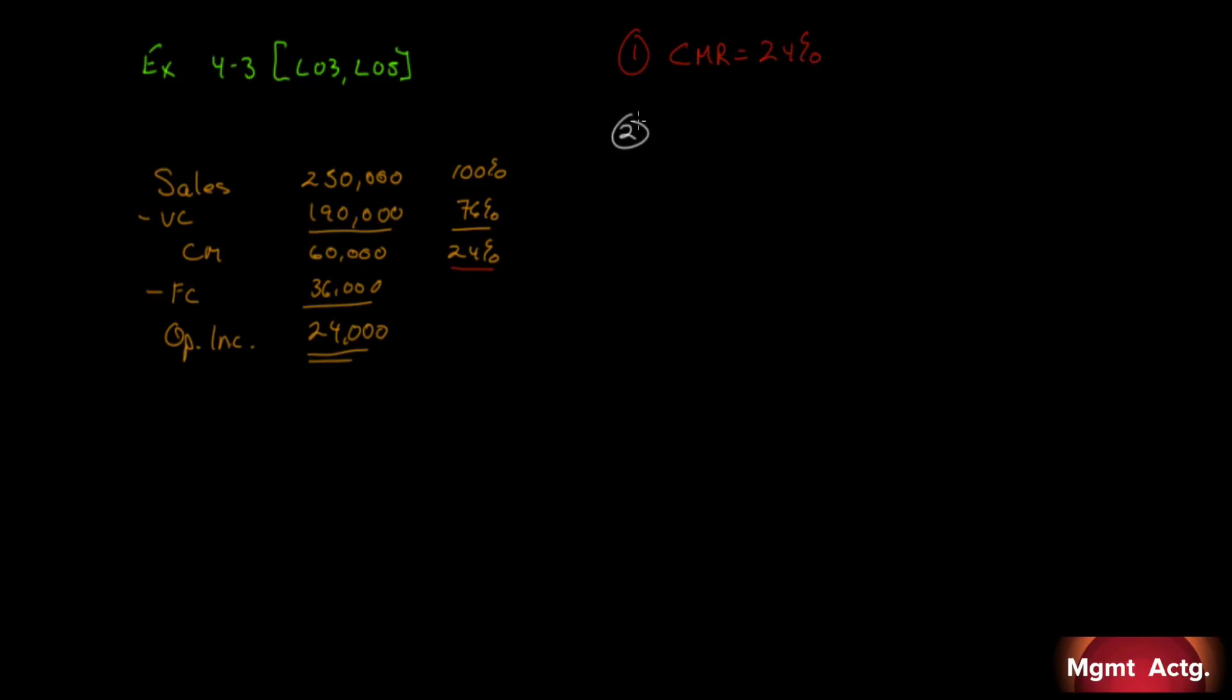Second question asks us, using the contribution margin ratio, calculate the break-even level of sales in dollars. Break-even level of sales in dollars is, we always have our fixed cost divided by the contribution margin ratio. Our fixed cost, we've already identified as $36,000. We've already got our contribution margin ratio of 0.24. This will give us $150,000. There's our break-even level in sales.